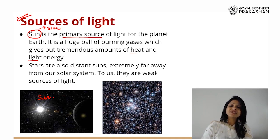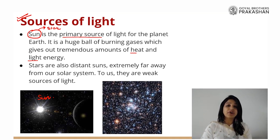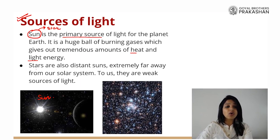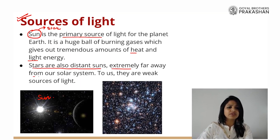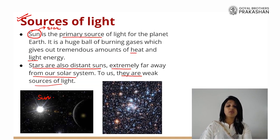At nighttime, you might have seen those bright, tiny dots in the night sky which keep on shining. They seem to be very tiny because they are very, very far away from us, but they are also gigantic balls of gases giving out a lot of heat and light. Stars are also distant suns which are extremely far away from our solar system, and hence the light that comes from them seems to be very weak, but they are also sources of light.